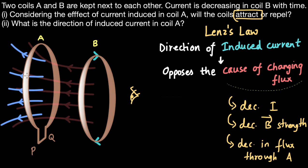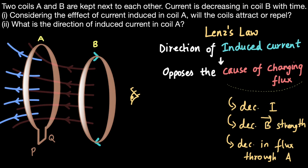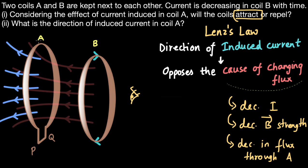For the magnetic field lines to move in the direction shown, the current must be flowing either from P to Q or Q to P, then through the entire coil. We can figure out the direction of the current using the right-hand curl rule. The magnetic field lines point in the direction of the thumb, and the curl of the fingers is in a clockwise direction. That means the current goes from Q to P, and that is the direction of induced current in coil A.